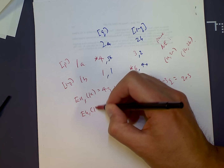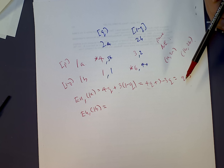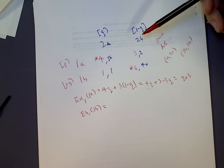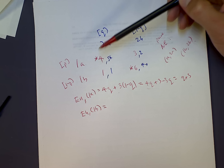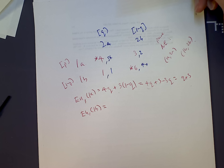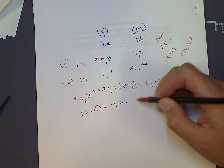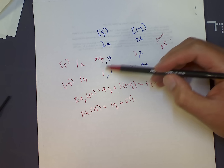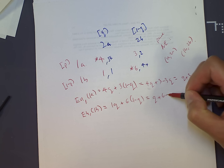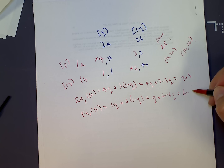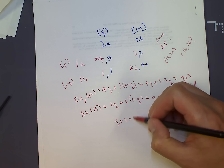Player 1's expected utility from playing B: if player 1 plays B, then player 2 plays A with probability Q and B with probability 1 minus Q. Player 1's payoffs here are 1 and 6. So it's 1 times Q plus 6 times 1 minus Q, which gives Q plus 6 minus 6Q, which equals 6 minus 5Q. To find the switchover probability, I set Q plus 3 equal to 6 minus 5Q.